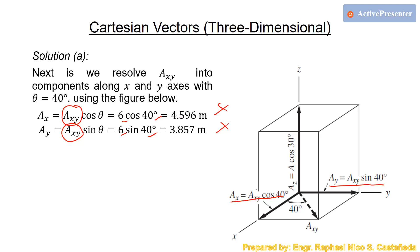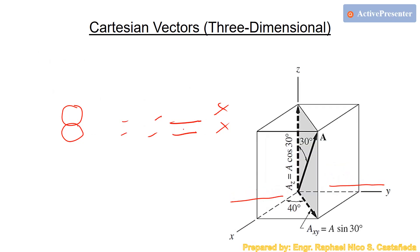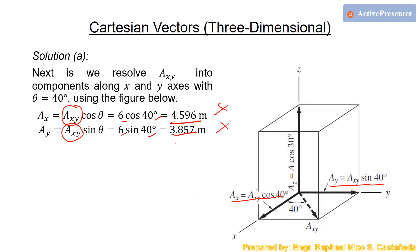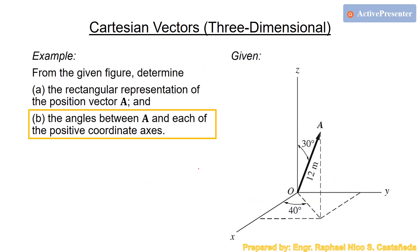So we have ax, ay, and az. AZ equals 10.39. Substituting all three values into the vector A formula gives the final answer for Problem A in vector form, with units in meters.